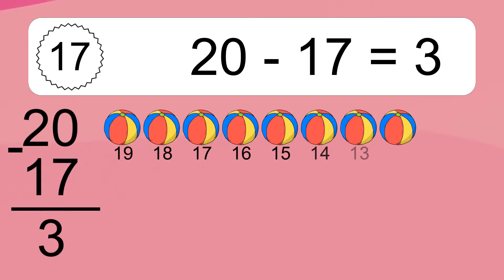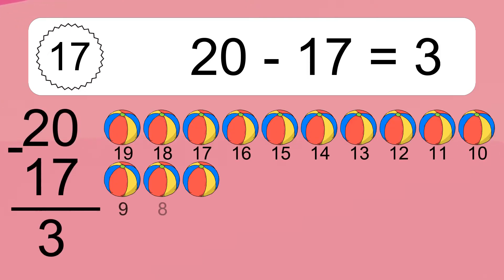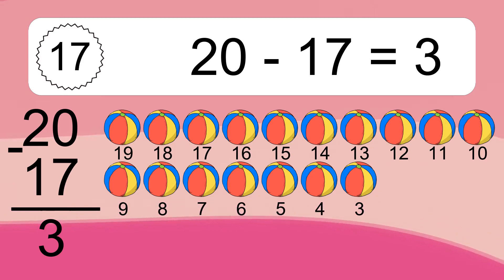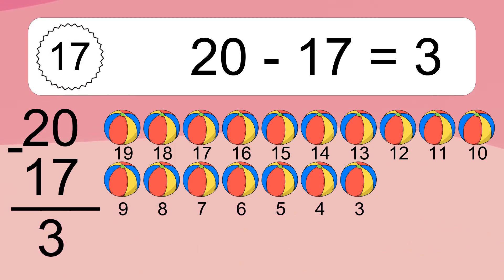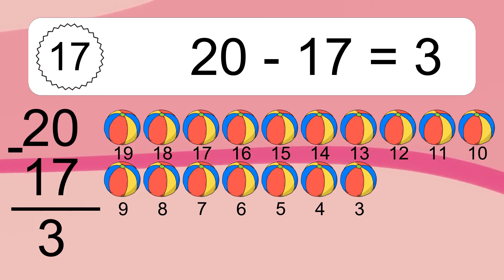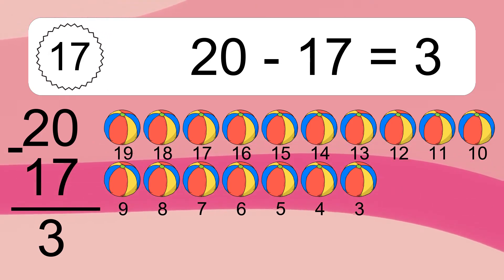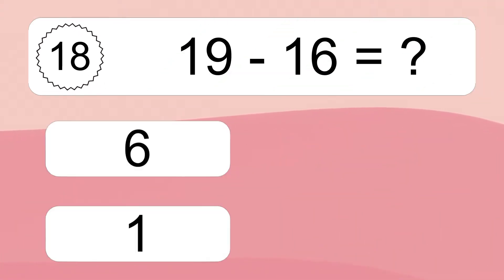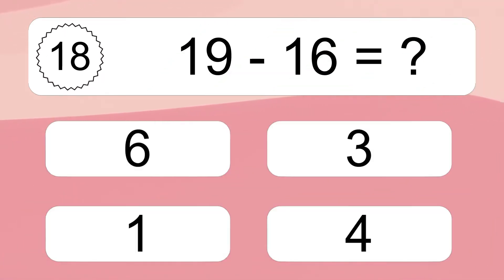20 minus 17 equals 3. Let's count it. 19, 18, 17, 16, 15, 14, 13, 12, 11, 10, 9, 8, 7, 6, 5, 4, 3. 19 minus 16 equals what?